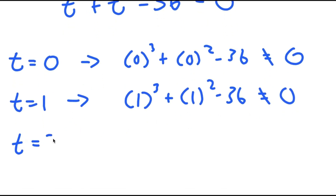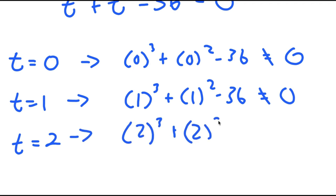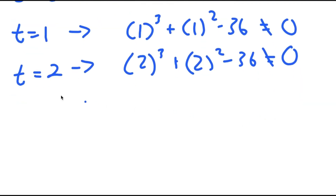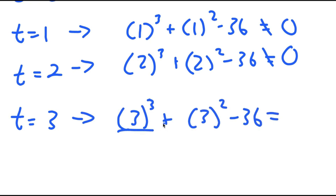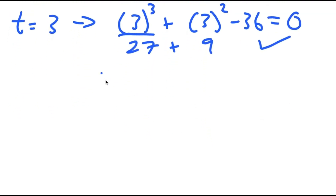Now I'm going to try t equals 2. If t equals 2, I get 2 to the power of 3 plus 2 squared minus 36. 2 to the power of 3 is 8, 8 plus 4 is 12, 12 minus 36 is negative 24, which is not equal to 0. Now we have t equals 3: 3 to the power of 3 plus 3 squared minus 36. 3 to the power of 3 is 27, plus 9, which is 36, minus 36. This does equal 0, meaning t equals 3 is a solution.